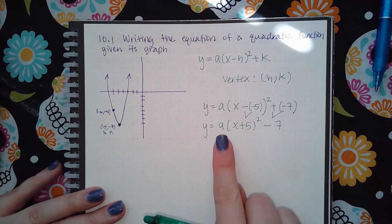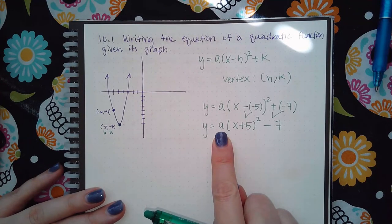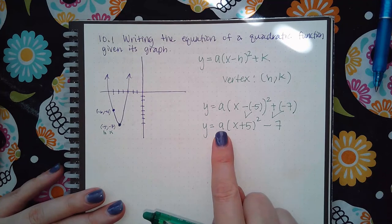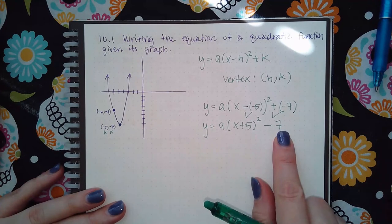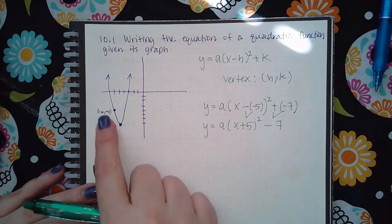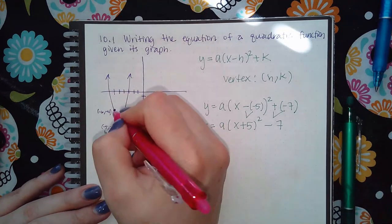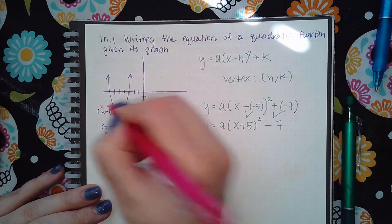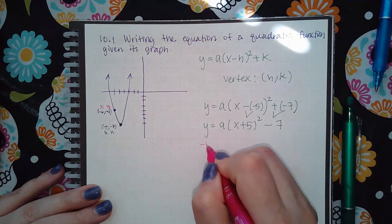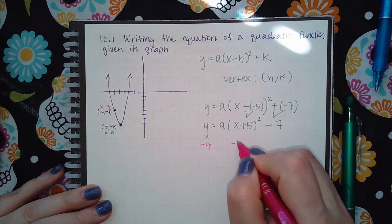The only problem is I don't know what this coefficient is, but I need to know what that coefficient is in order for me to give them my final answer. So what you do is you use this, and you remember this is another point that's given, and I'm going to use the x coordinate and the y coordinate. So the y is negative 4 and the x is negative 6.